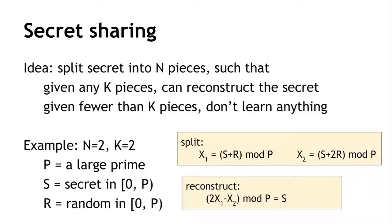Given two shares we can reconstruct, but given only one share we learn nothing. Consider x1 = S + r mod p: since r is chosen randomly and could take on any value between 0 and p-1 with equal likelihood, the result S + r mod p is equally likely to take on any value between 0 and p-1, regardless of what S was. So this share looks like a purely random number and doesn't convey anything about S. Similarly, x2 by itself conveys no information about S. That's n=2, k=2 secret sharing.